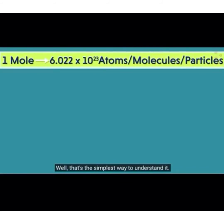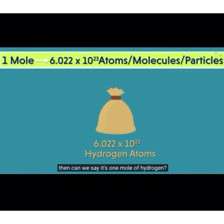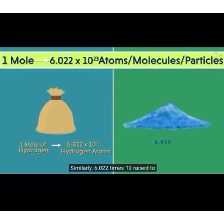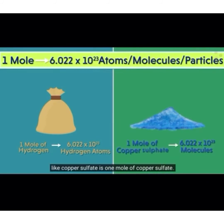That's the simplest way to understand it. That means if we take a bag containing 6.022 times 10 raised to 23 hydrogen atoms, then we can say it's 1 mole of hydrogen. Similarly, 6.022 times 10 raised to 23 molecules of any compound like copper sulfate is 1 mole of copper sulfate. Simple, isn't it?